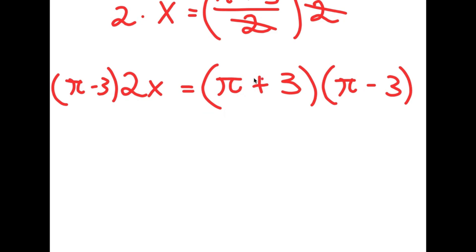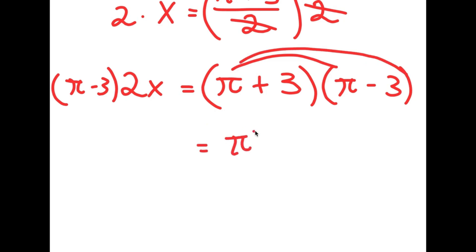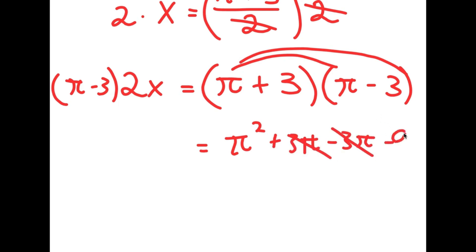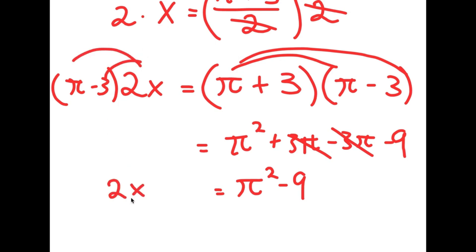Now, pi plus 3 times pi minus 3 — I'm going to distribute the pi. So I get pi squared plus 3pi minus 3pi, which just cancel out, and then I have minus 9 at the end. So this is pi squared minus 9. And for my left-hand side, I can distribute the 2x, so I get 2x times pi minus 6x.